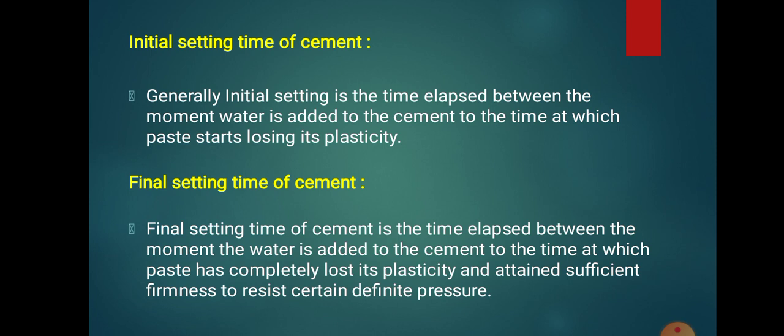To find out the final setting time of cement, we use needles. The cement paste has hardened sufficiently in such a way that a 1 mm needle makes an impression on the paste but a 5 mm needle does not make any impression. From the starting when water is added to the cement to when it has completely lost its plasticity, that between time is known as the final setting time of cement.